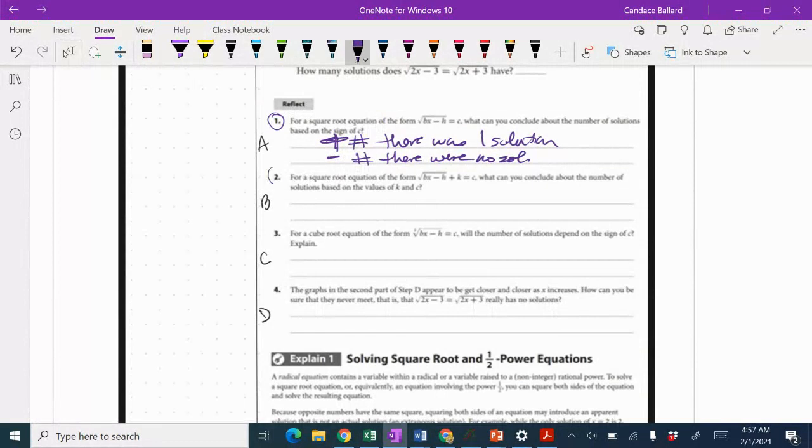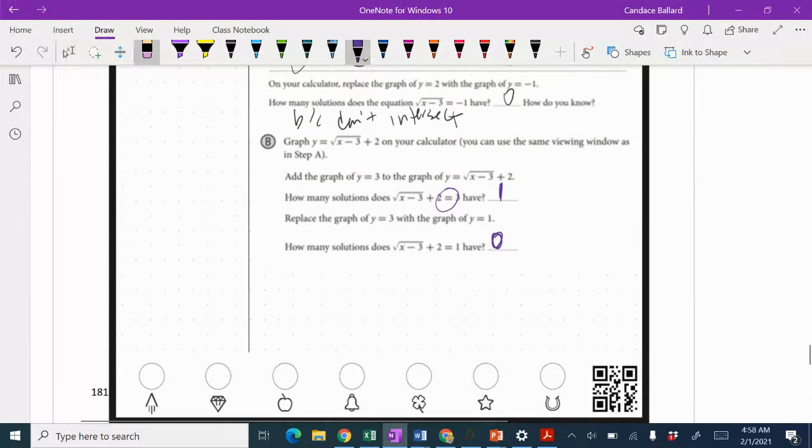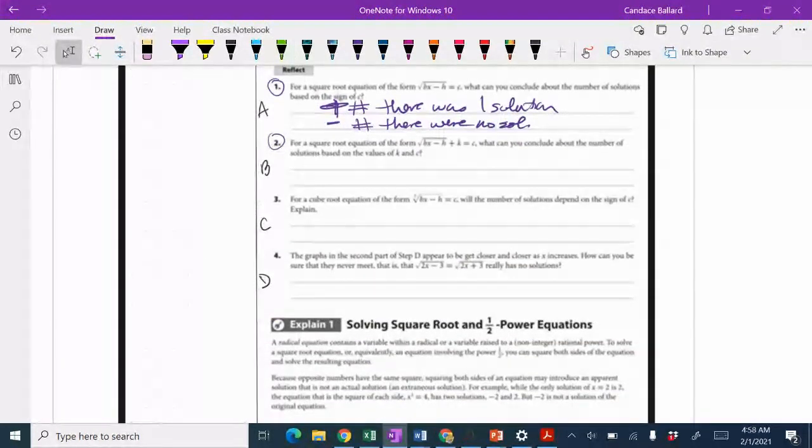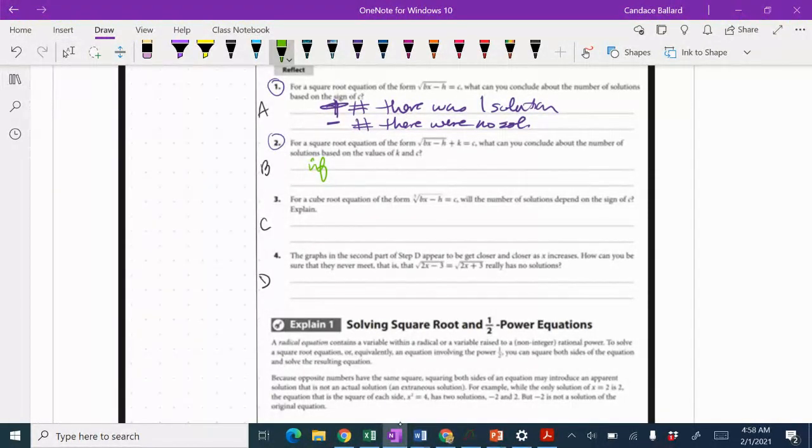For a square root of the form square root of bx minus h plus k equals c, what can you conclude about the number of solutions based on the values of c and k? In the first equation, the k value was smaller than the value of c. So k was less than c, and we had one solution. When k was greater than c, we had no solution. So if c is greater than k, then there's one solution. If c is less than k, then there's no solutions.